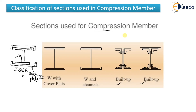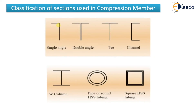Other sections used for compression members include single angles, double angles, T-sections, channel sections, simple W columns (Indian Standard Wide Flange Beam), pipe or round sections, square hollow sections, and circular hollow sections. If asked in an exam, you should list and if possible draw these sections to maximize marks.